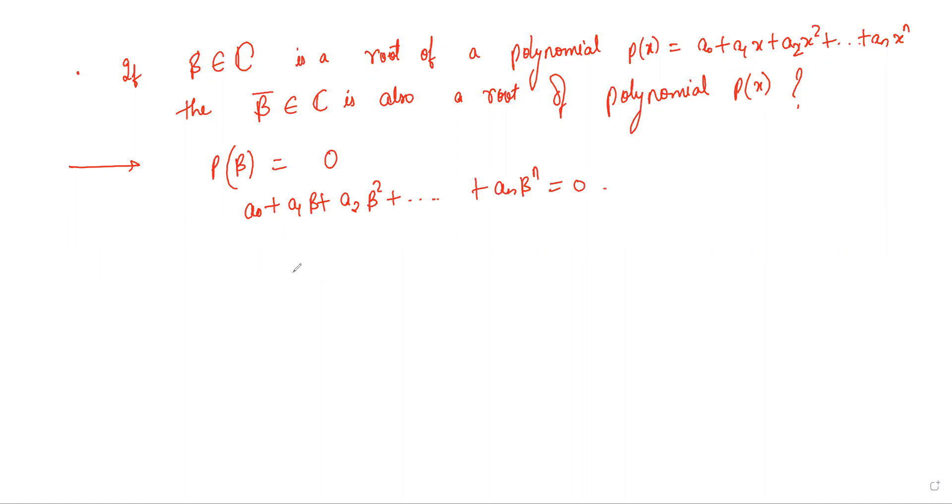Now take conjugates on both sides. On taking conjugate on both sides, we get a_0 bar plus a_1 beta bar plus a_2 beta squared bar.